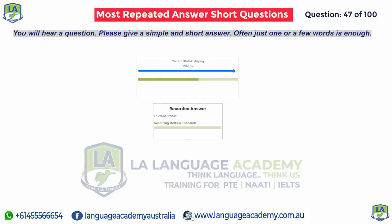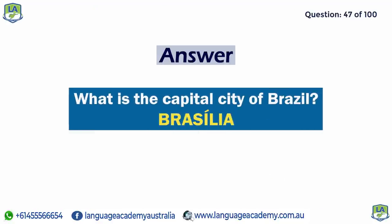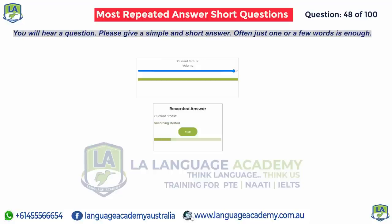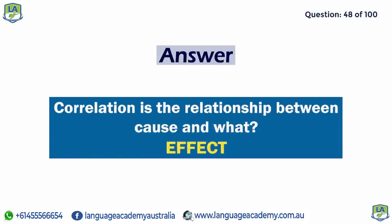What is the capital city of Brazil? Brasília. Correlation is the relationship between cause and what? Effect.